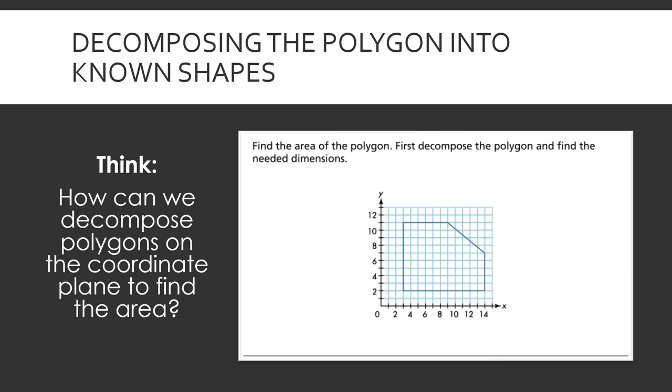Find the area of the polygon. First, decompose the polygon and find the needed dimensions. The polygon is decomposed into which shapes? How do you find the dimensions of the shapes? The polygon is decomposed into two rectangles and a triangle. To find the dimensions of the shapes, count the squares between vertices.